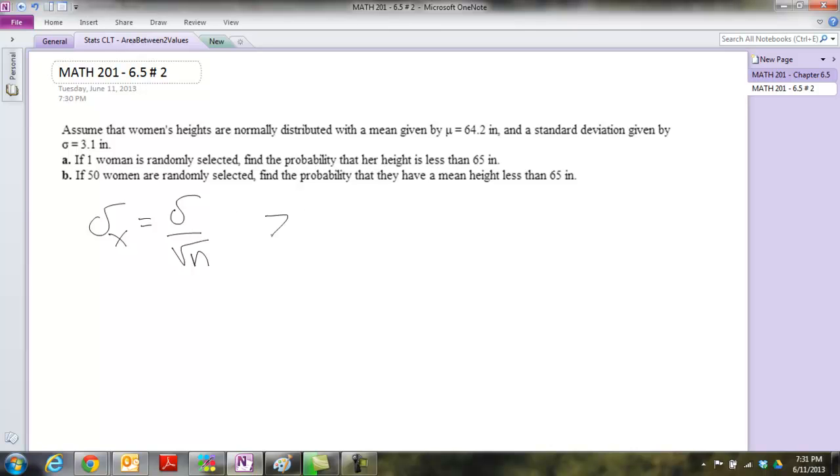For instance, when you're coming up with z-scores, right, you've got x minus mu over sigma. How do you know when to use sigma or when do you use sigma x, i.e. this thing, right? When do you divide by square root of n when you do not divide by square root of n?